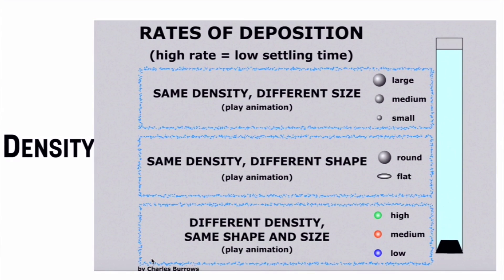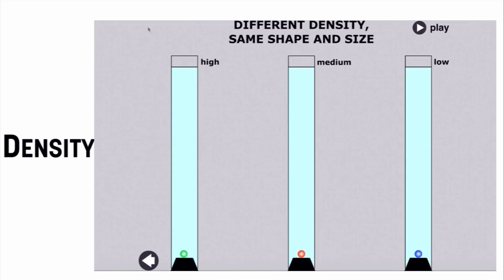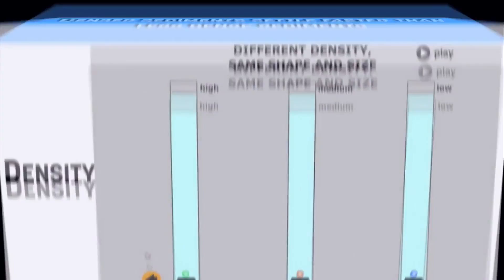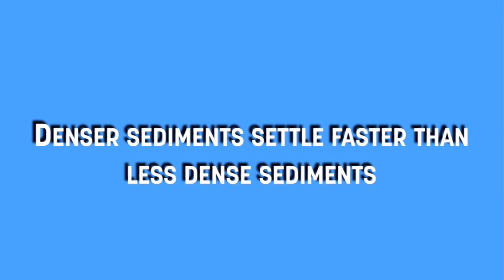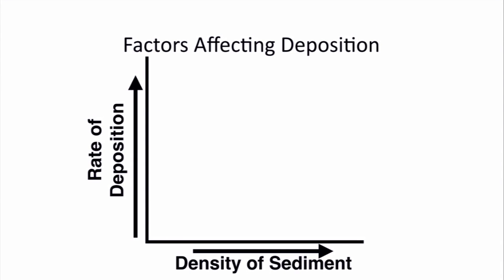Our last characteristic is density. Density has to do with the ratio of mass to volume. A denser material is going to sink faster than a less dense material. So whatever rocks or sediments are being carried, the denser sediments are going to settle faster than the less dense sediments. On a graph, as you increase the density of the sediment, you get a faster rate of deposition.